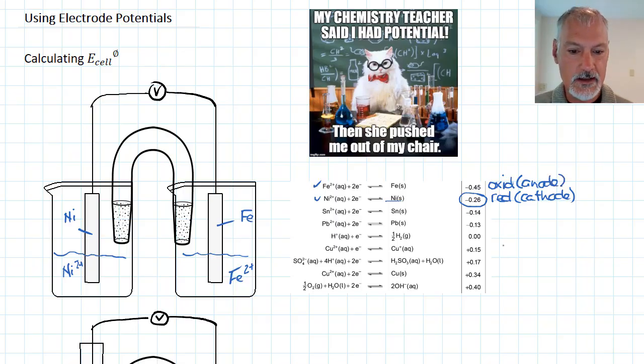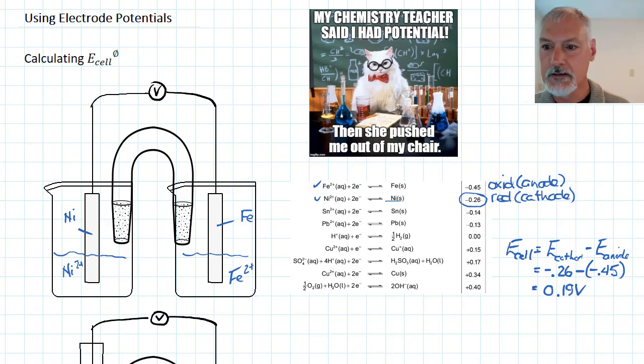To calculate the energy or the potential of this particular cell, what I have to do is take the potential of my cathode and subtract the potential of my anode. So in this case, negative 0.26 volts minus minus 0.45 volts.